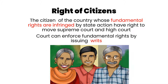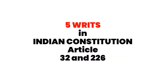Now coming to the rights of citizens — as soon as any fundamental right is infringed by state action, they have the right to move both the High Court and the Supreme Court. Fundamental rights are always enforceable against the state, against the government. The court can enforce fundamental rights by issuing writs. A writ is a legal terminology — it is a written order of a court which carries the authority of the court. If we approach a competent court, we can apply for the court to issue a specific order — this is a request to issue a special kind of written order.